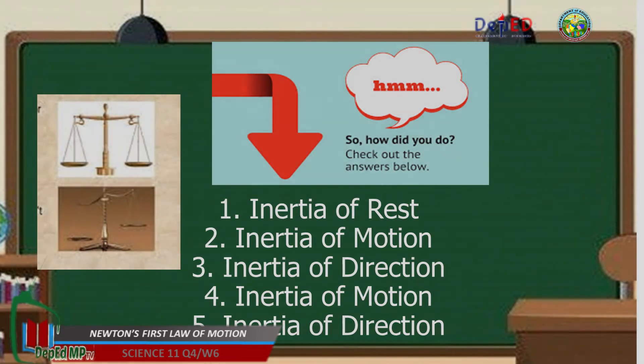All right, so let's check. Number 1, inertia of rest. Number 2, inertia of motion. Number 3, inertia of direction. Number 4, inertia of motion. And number 5, inertia of direction.